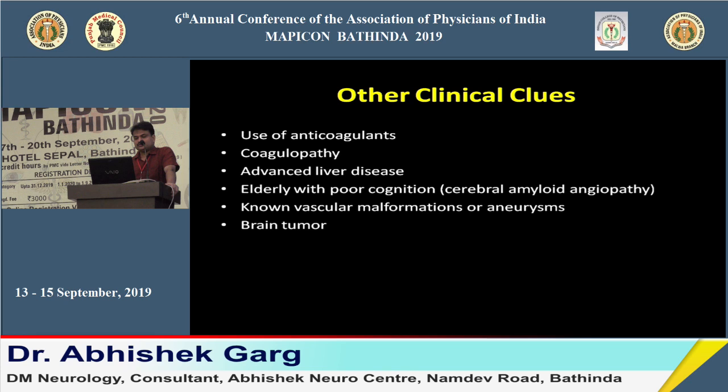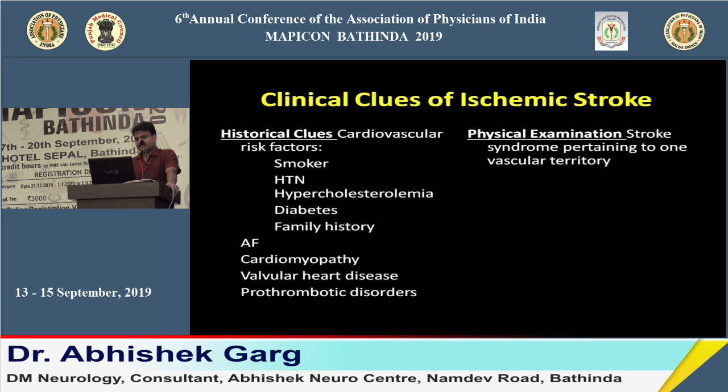Other clues favoring hemorrhagic stroke include: use of anticoagulants, coagulopathy, advanced liver disease, elderly patients with dementia, known brain tumor, or history of aneurysm. In those scenarios, we should keep the possibility of hemorrhagic stroke over ischemic stroke.